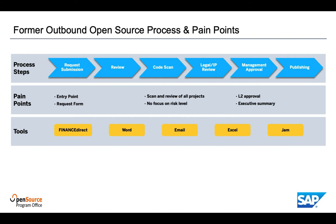Given his approval, the development team could then continue to publish their project as open source on public GitHub. The process in this form had several pain points and deficiencies. Process execution was strictly sequential, leading to unnecessary delays in the end-to-end process execution.